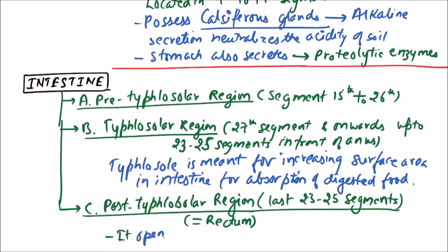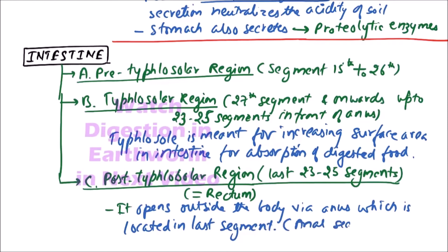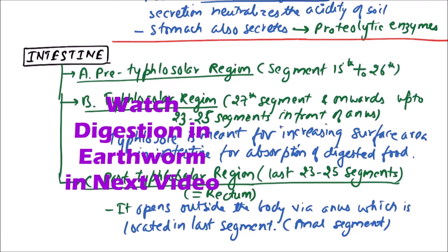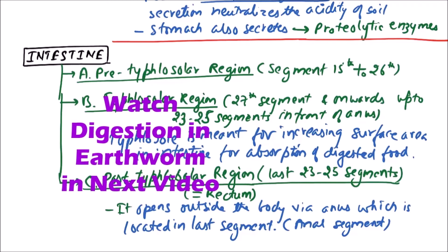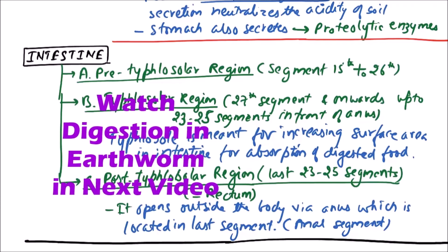sometimes termed as rectum, and it opens outside the body via anus which is located in the last segment of the body. That's why it is also known as anal segment, also termed as pygidium. So this is all about the gut or alimentary canal of earthworm.